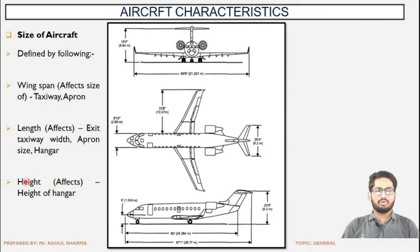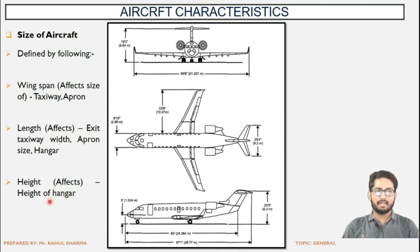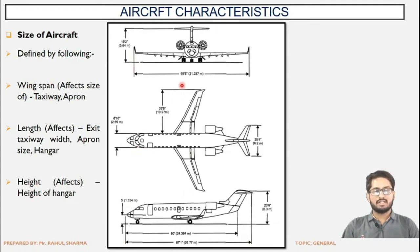The height of the aircraft affects the height of the hangar, because the hangar will be housing the aircraft. What should be the clear height of the hangar will depend upon the height of the aircraft which is going to use that hangar. So while designing, the height, length, and wingspan of the aircraft will ultimately have an effect on the design portion.